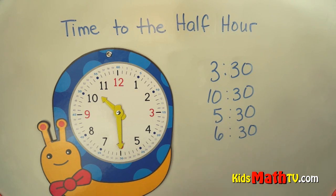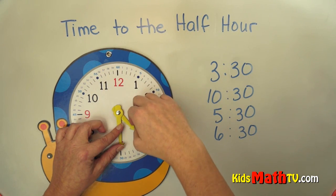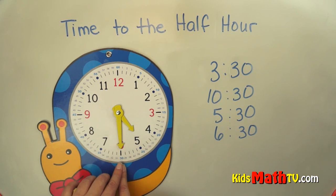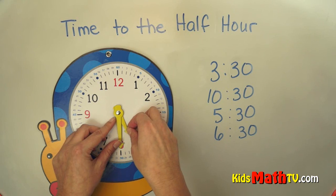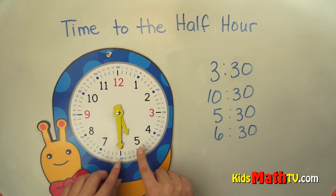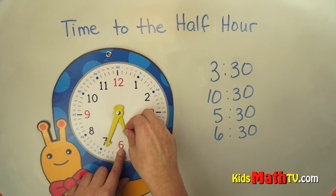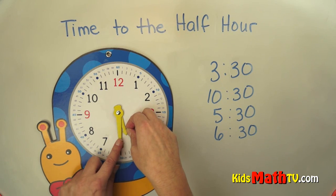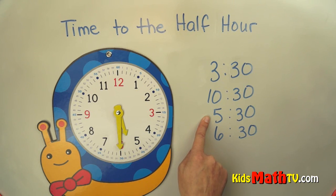Let's try a couple more. 5:30 — well, 5:30 is half past 5. The minute hand, or the big hand, is still on the 30. And since it's half past, the hour hand needs to be between the 5 and the 6, with the minute hand on the 30. So this is 5:30 or half past 5.